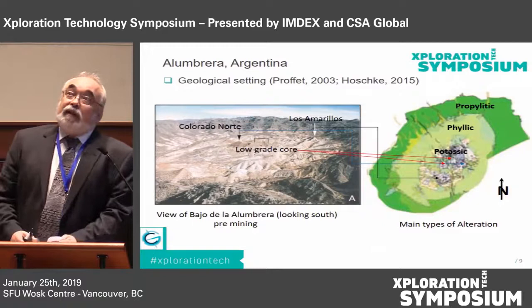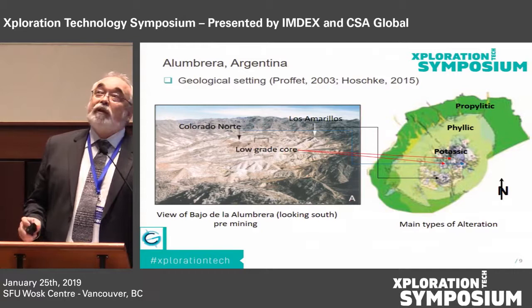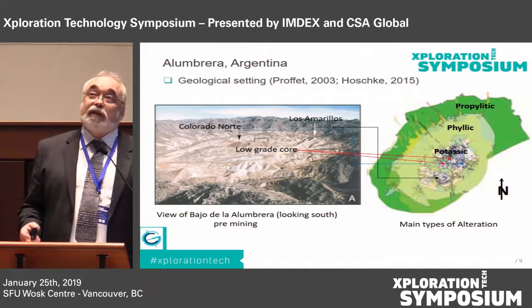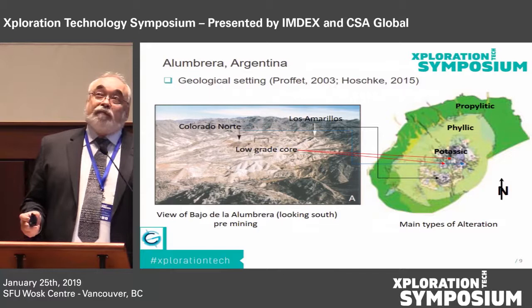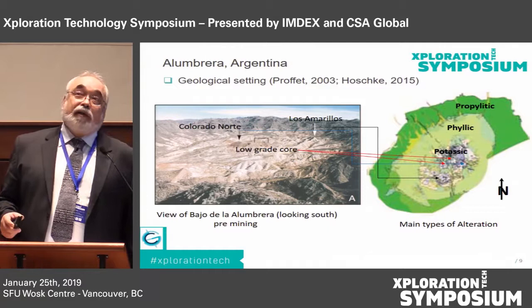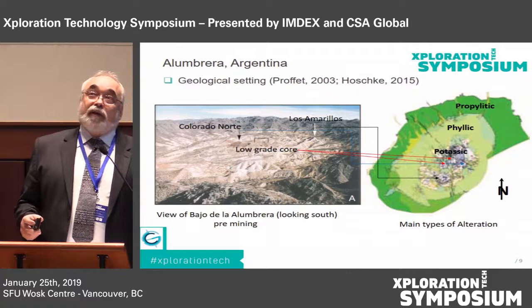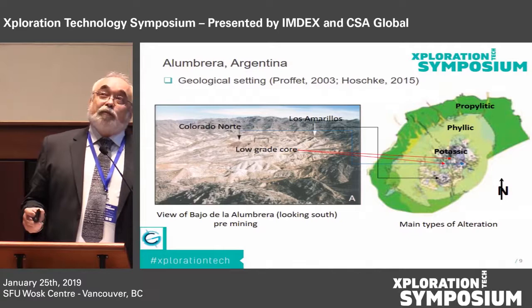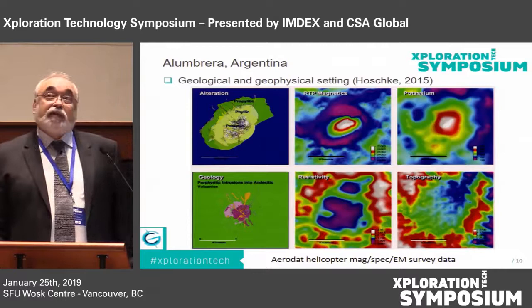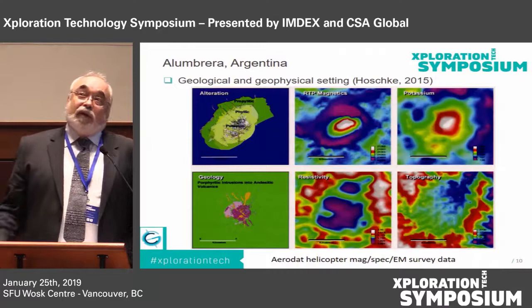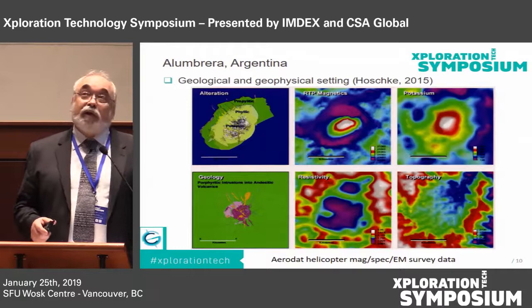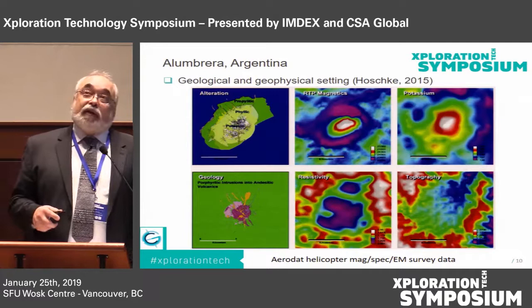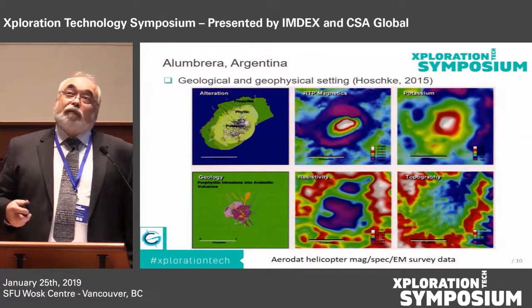The first case history is a fairly simple, well-known deposit: Alambrera in Argentina. The alteration has been mapped out — propylitic, phyllic, and potassic — each with its own distinct geophysical response. There are three main areas: Colorado Norte, a high-grade buried zone; Los Amarillos, another high-grade zone; and a low-grade conductive core. Looking at the geophysics, the magnetics show a magnetic high over the core of the deposit and a circular ring structure in areas of magnetite destruction in the phyllic and propylitic zones.